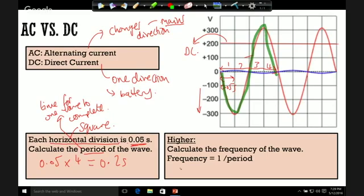Now for higher tier, what you'd have to do, they don't give you this equation on the exam paper so you need to remember this one, you need to calculate the frequency and to do that you do one divided by the period. Over here we said it's 0.2 seconds, so we would get a frequency of 5 hertz.